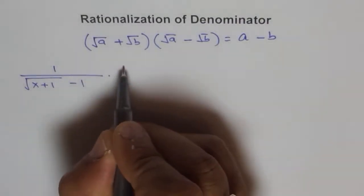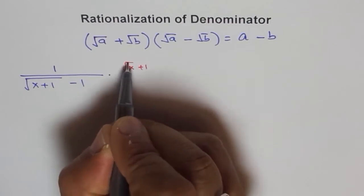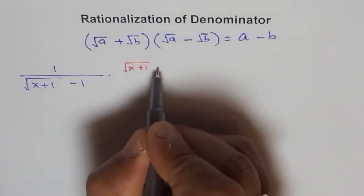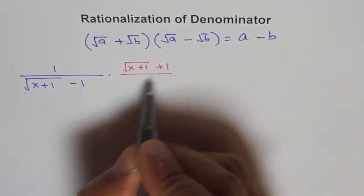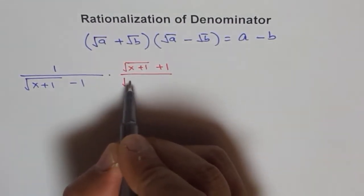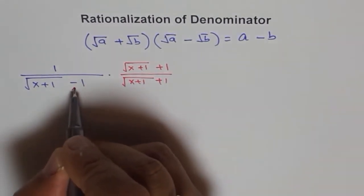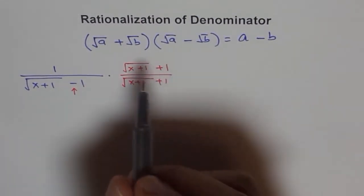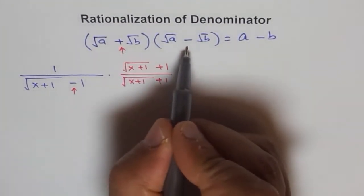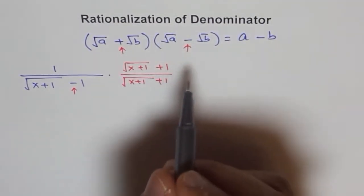The conjugate is square root of x plus 1, plus 1, divided by square root of x plus 1, plus 1. Note this sign — it has to be reversed. So the signs in the conjugate are reversed from the original denominator. That is the whole idea.